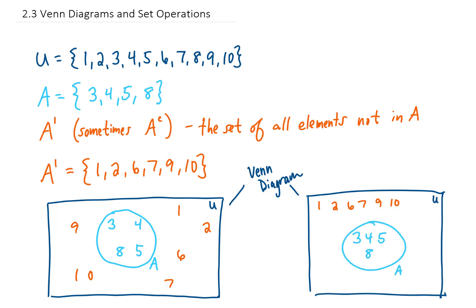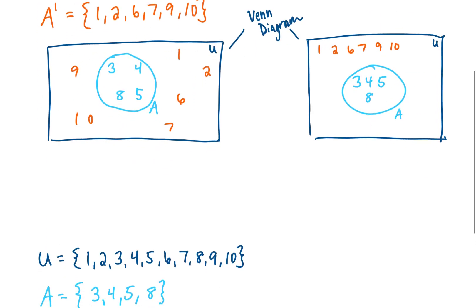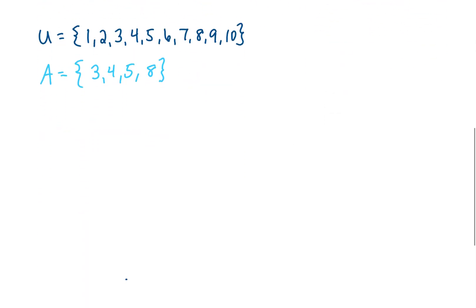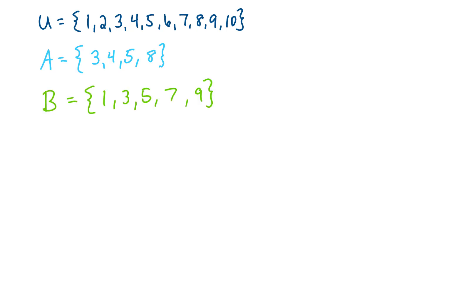For example, something like this would be the exact same Venn diagram. Now, as we always do in math, why don't we complicate this situation a little bit. Let's start with the same universal set and the same set for A, but let's add in a set B. And let's say the elements in B are 1, 3, 5, 7, and 9.